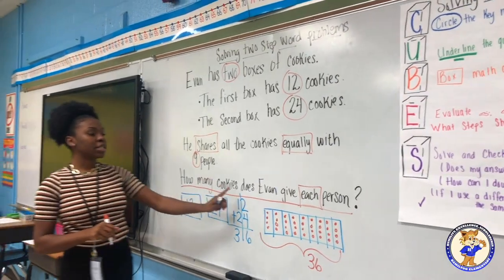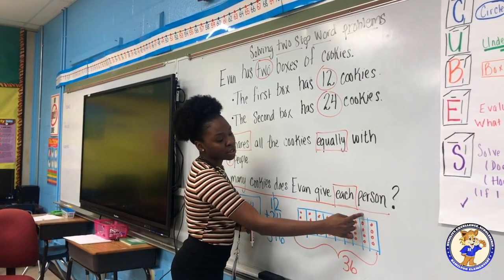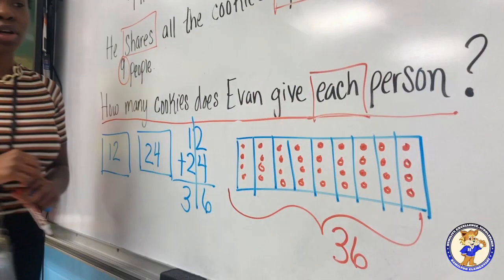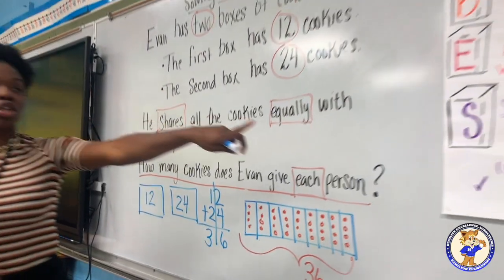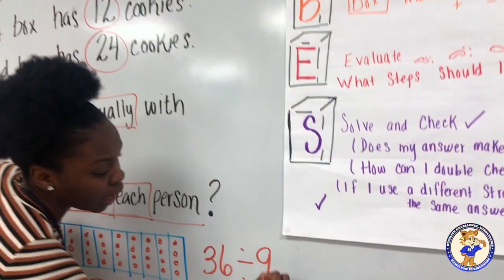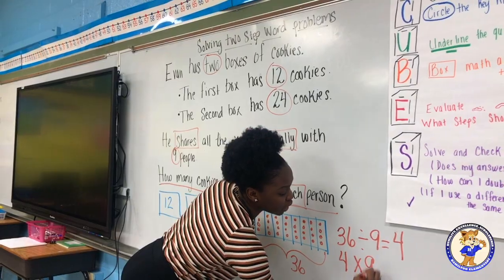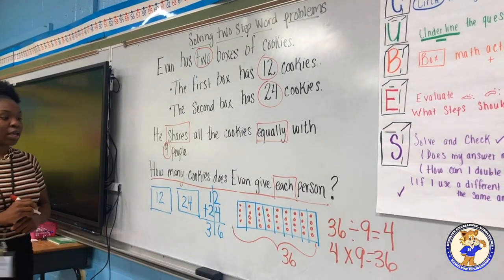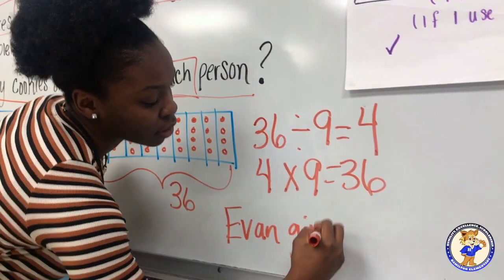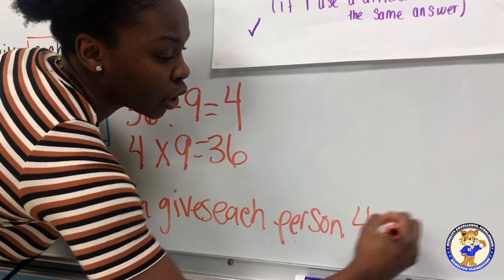Back to our question: how many cookies does Evan give each person? Once we look at our people, we can count how many cookies each person has. One person has one, two, three, four cookies. That means every other person has four cookies. So how can we write this as an equation and solve according to our CUBES? We can write 36 divided by nine people equals four, or we can say four times nine equals 36. So how can we write that in a complete sentence? Evan gives each person four cookies.